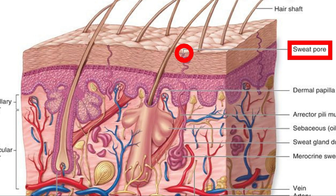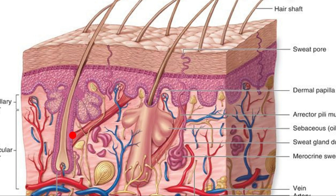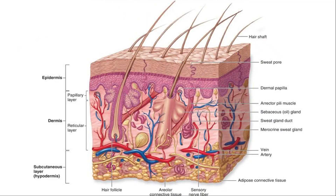So we have the hair follicle, the sebaceous gland, and the sweat gland. This is the dermis, and this is the epidermis. The dermis is the structure of the dermis, let's take a look at this.